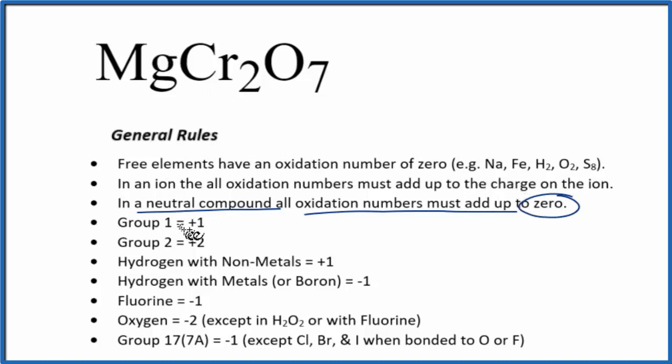We also know that magnesium is in group two, so it'll have a plus two as its oxidation number. Chromium is a transition metal, it has a number of different oxidation states, so we don't know that. We're going to call that X. Oxygen right here, always minus two, with just a few exceptions. So each of these oxygens here, minus two.